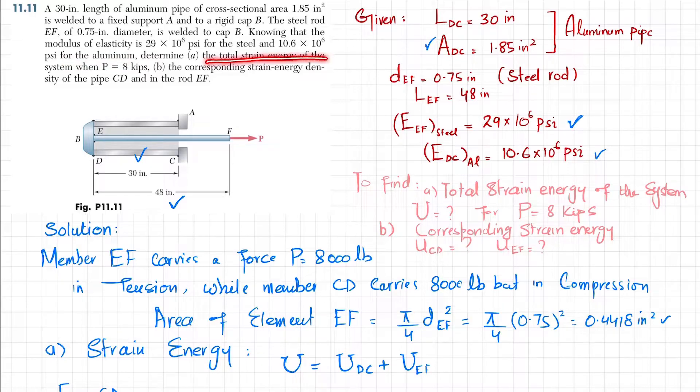Determine the total strain energy of the system when P is 8 kips, and the corresponding strain energy density of pipes CD and EF. From the given data, we know that the length of pipe CD is 30 inches, and the area of DC is 1.85 square inches. The diameter of rod EF is 0.75 inches.